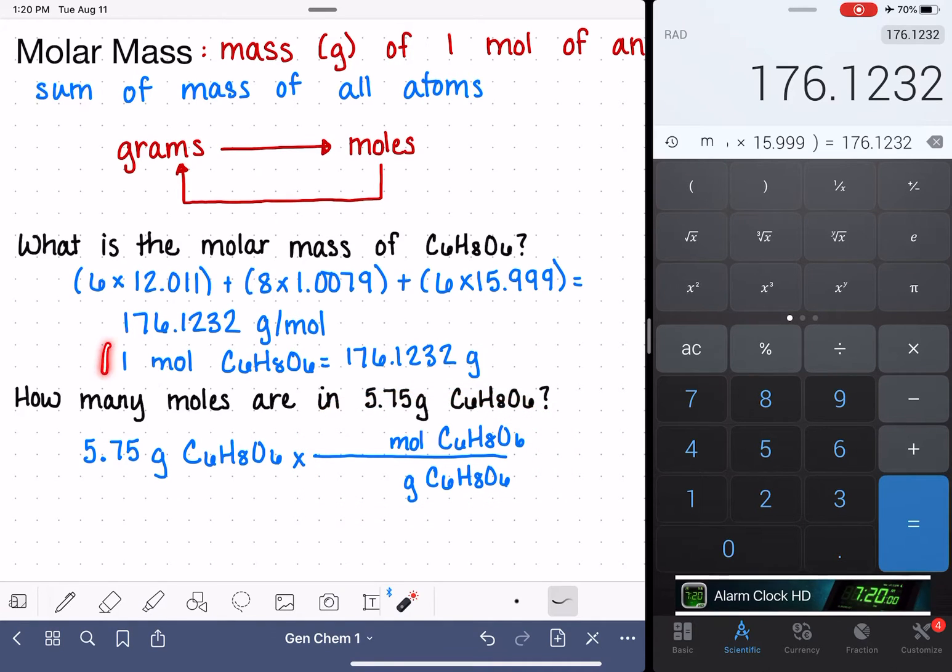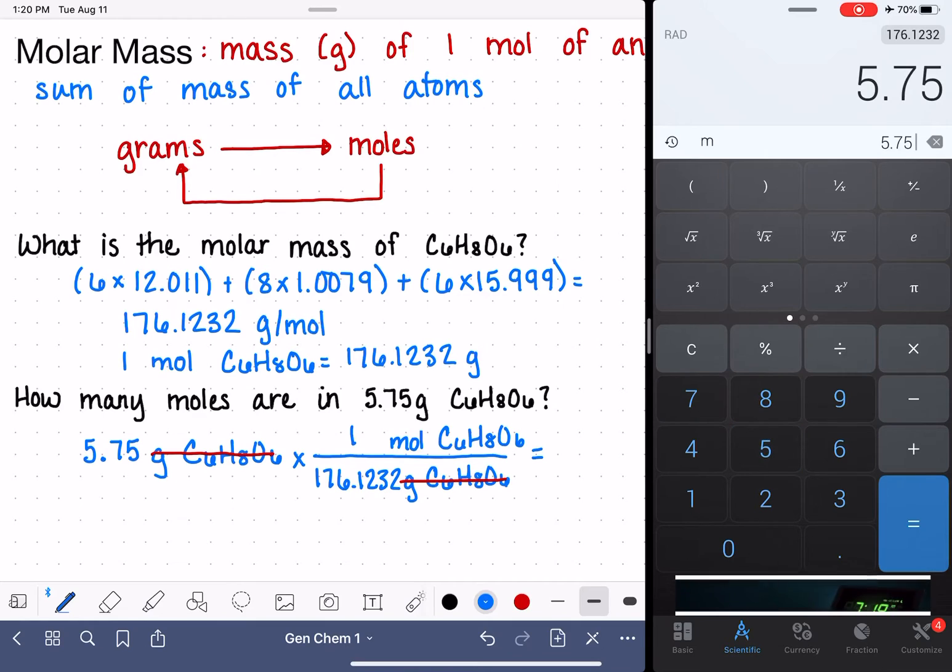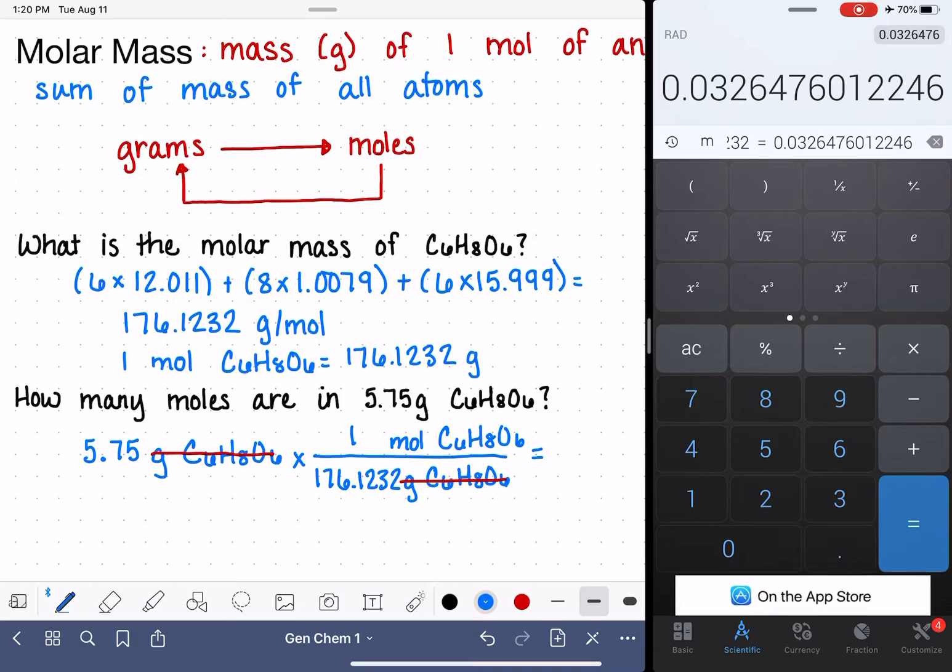We're looking for numbers that we can fit into this conversion factor. From the molar mass, one mole equals 176.1232 grams. The way we've set this up, the grams cancel out and we're left with units of moles. 5.75 divided by 176.1232, to the correct number of sig figs, gives us 0.0326 moles of C6H8O6.